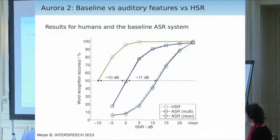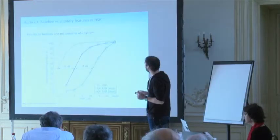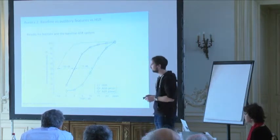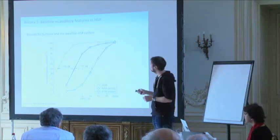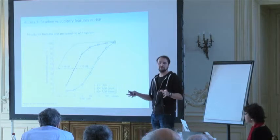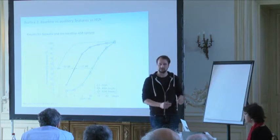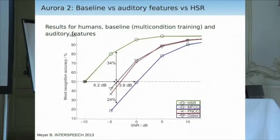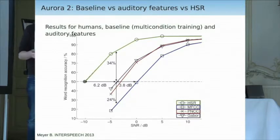These are the results: signal-to-noise ratio versus word recognition accuracy. In green is the human performance; in blue tones is automatic speech recognition for different training modes. The overall gap between humans and machines is at least 10 dB for this basic ASR system. Plugging our auditory features in — without any backend modifications — the gap was reduced by approximately 4 dB, but we still have some way to go.